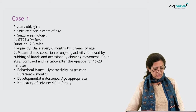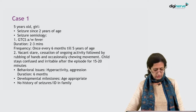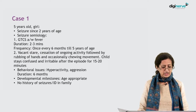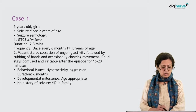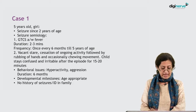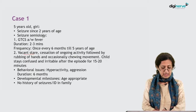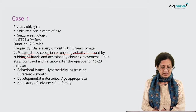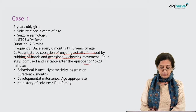This is a five-year-old girl with seizures since two years of age. The seizure semiology was: generalized tonic-clonic seizures associated with fever, duration two to three minutes, frequency once every six months till five years of age. There was also a vacant stare, cessation of ongoing activity, followed by rubbing of hands and occasional chewing movements.